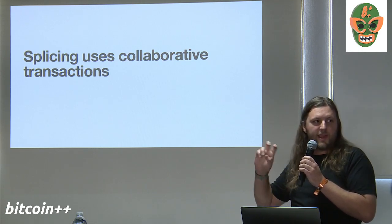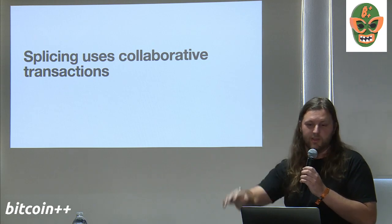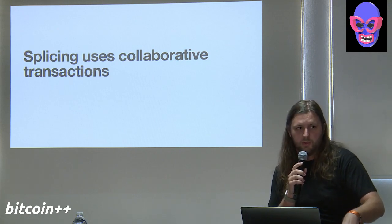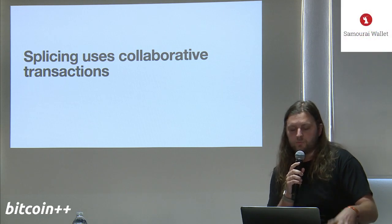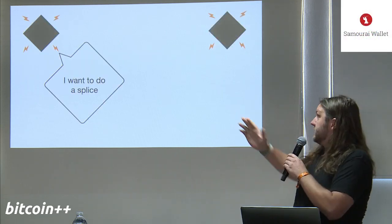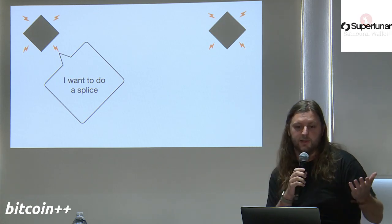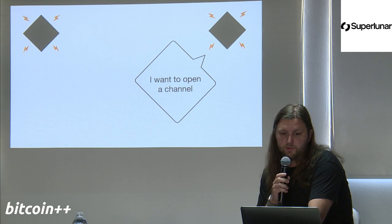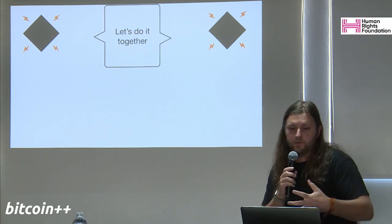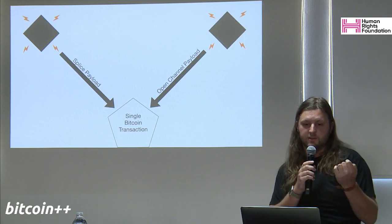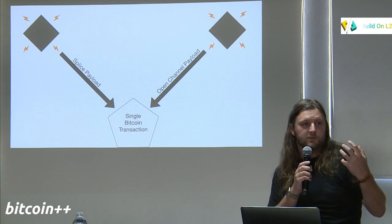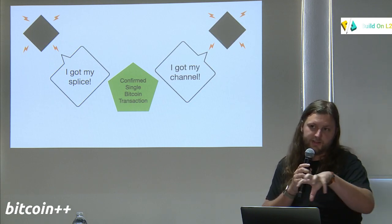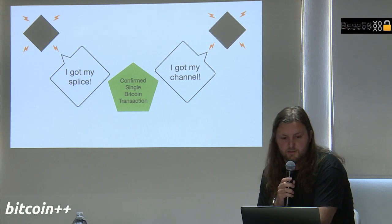Who here has heard of collaborative transactions or interactive transactions? These are very exciting. It's a protocol for nodes to build transactions together. Here we have two nodes — one wants to do a splice and tells its peer. The other peer says it wants to open a channel. With the collaborative transaction protocol, they decide to do it together. They take their payloads — the splice payload and the open channel payload — merge them into a single transaction. When it gets confirmed, they both get what they wanted through the same transaction.